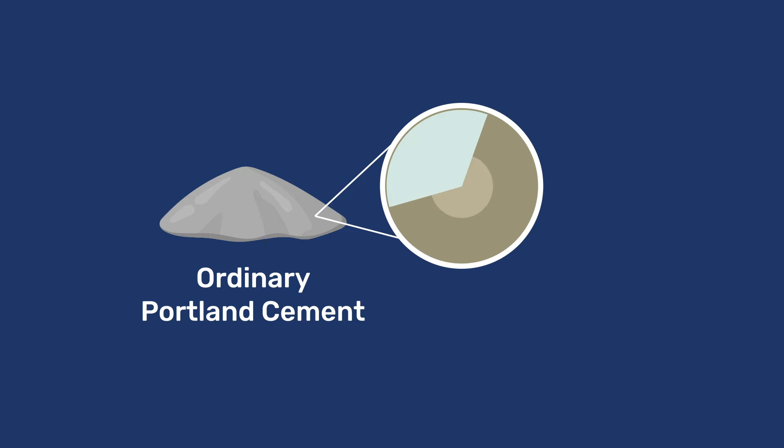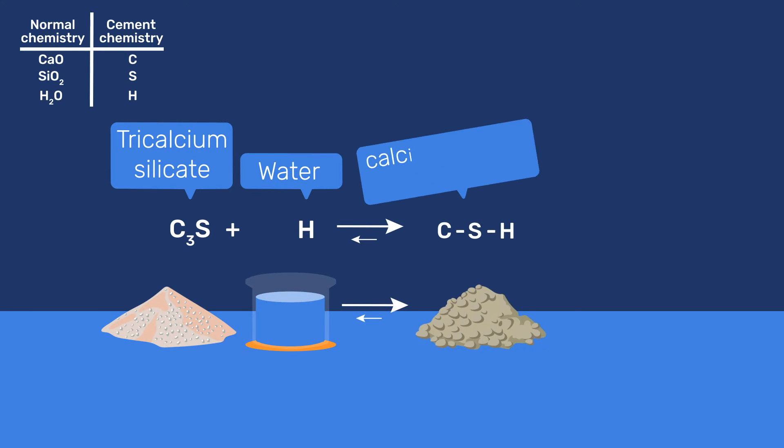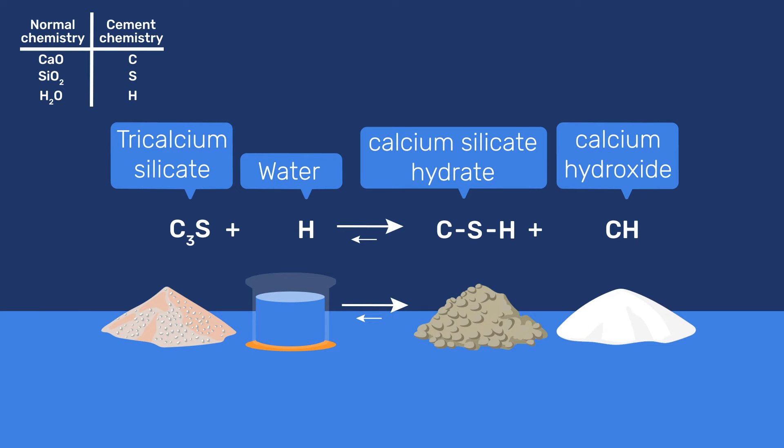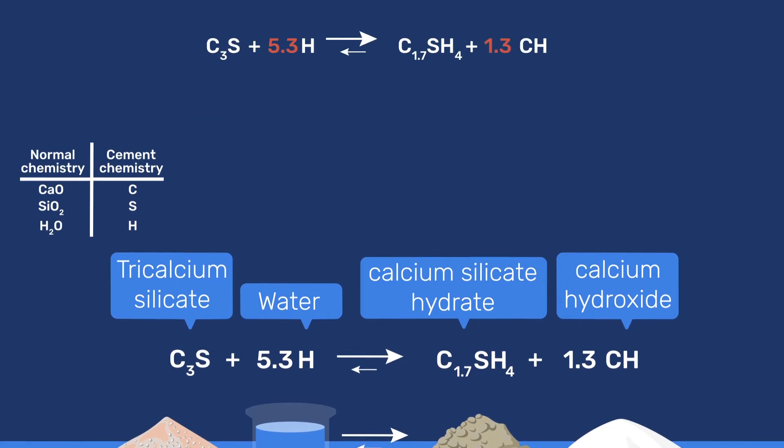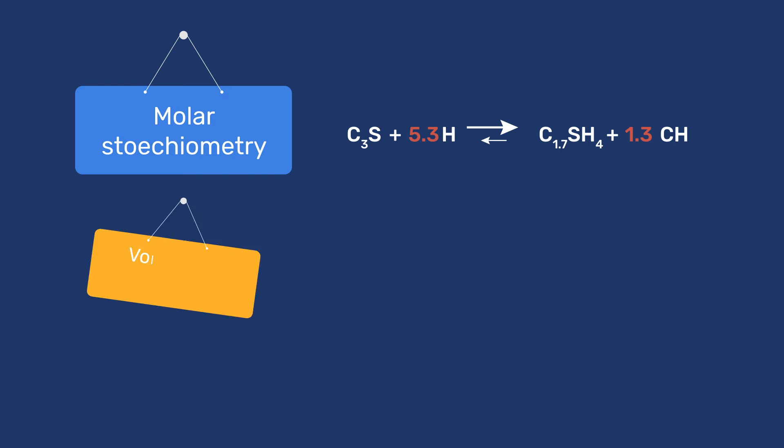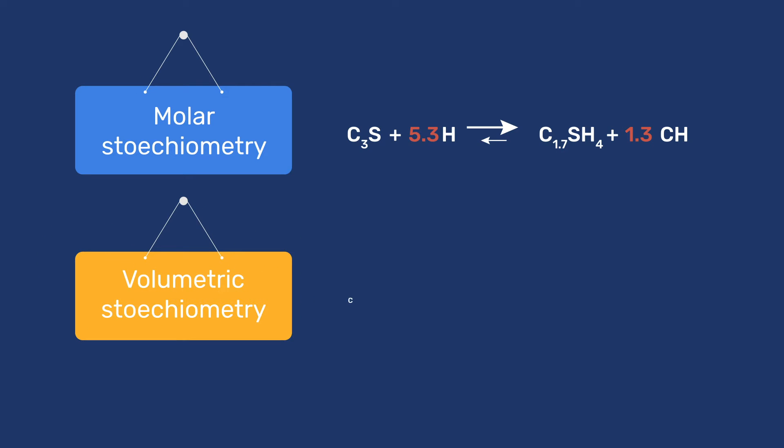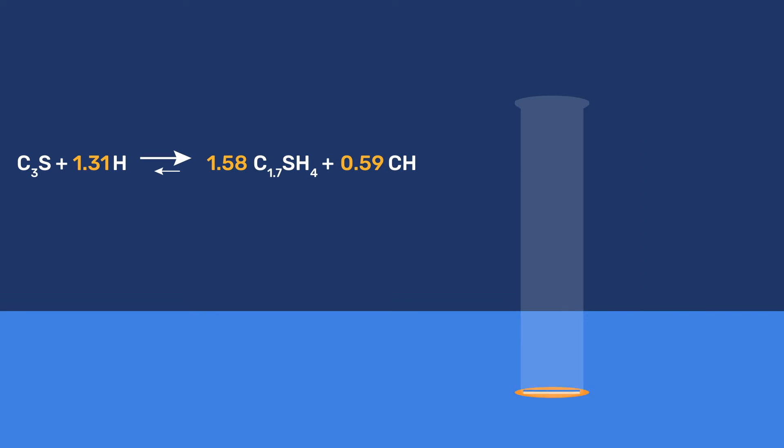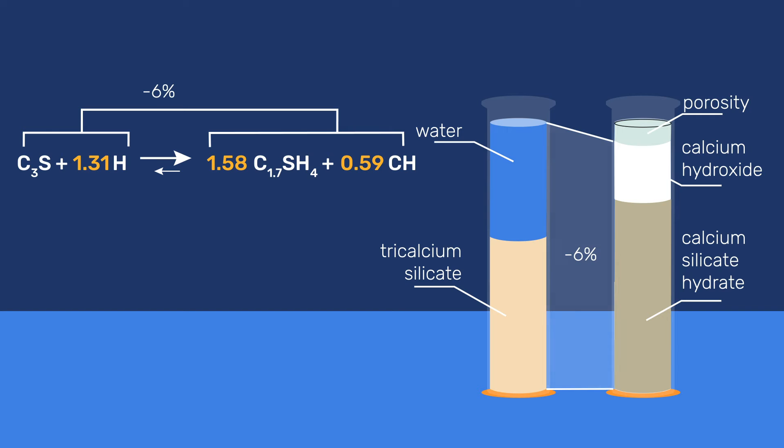C3S is the most important and abundant phase, representing 50 to 70% of OPC. It reacts with water to produce CSH and CH. Using an average stoichiometry for CSH as C1.7SH4, we have that C3S plus 5.3H gives 1.58 CSH plus 1.3CH. Transforming this reaction from molar stoichiometric coefficients to volumetric ones gives the products shown. This corresponds to a chemical shrinkage of about 6%, which is mostly found in the form of porosity in the hardened cement paste.